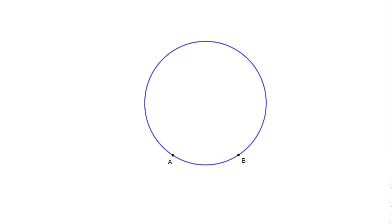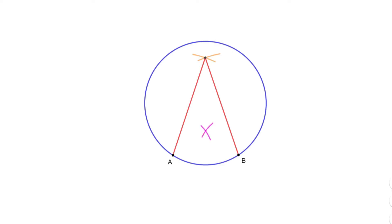Let us take the compass, put it at A and draw an arc. Taking the same radius, put the compass at B and draw another arc. Mark the point of intersection. The distance from A to this point and from B to this point are equal — but is it the center? No, we can see it is above the center. Let us decrease the distance. Once again put the compass at A and draw an arc, then at B with the same radius and draw another arc. Mark the point of intersection. The distance from A and from B to this point are equal — is it the center? No, it is below the center. It is difficult to find the center by doing this.